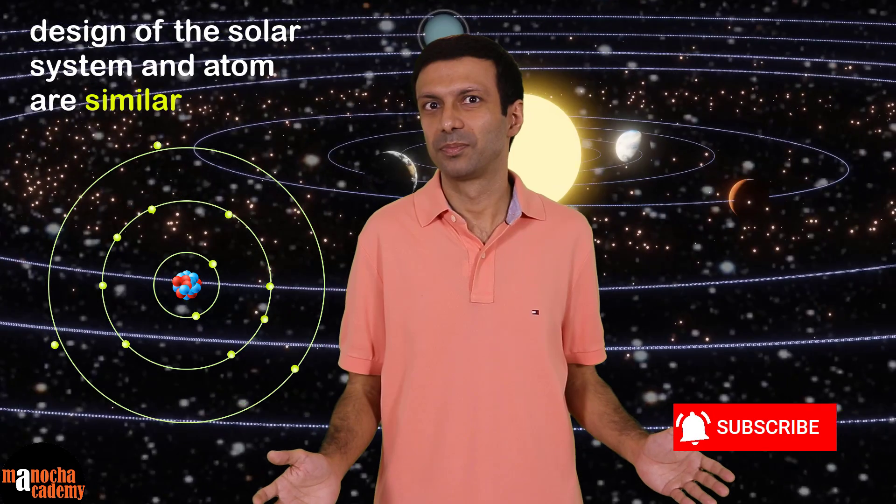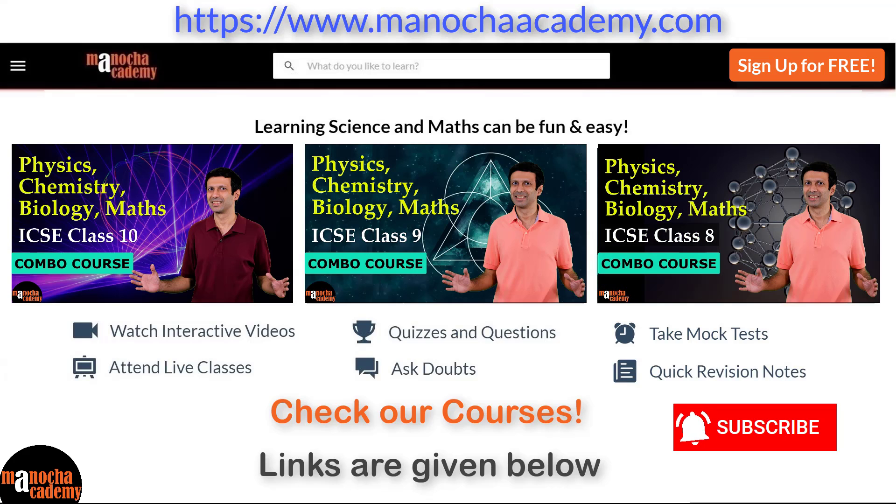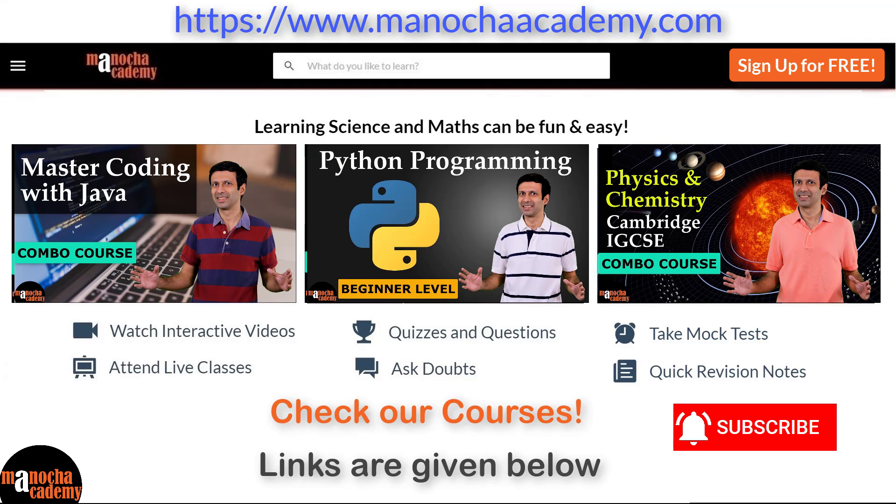Isn't it simply amazing that the design of the solar system and the atom are pretty similar? The solar system is this gigantic thing, and the atom is a very, very tiny particle. But they both have a heavy center with light things revolving around the center, and the space in between is just vacuum. And do check out the full courses for physics, chemistry, biology, maths, and computer coding on our website, manuchaacademy.com. I'll put the links below. Hope you like it and happy learning.